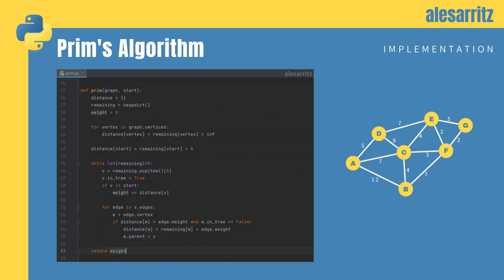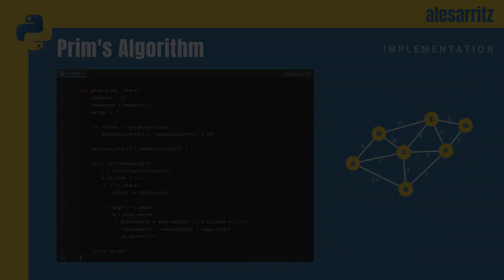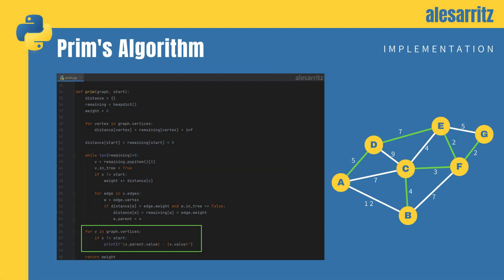When we exit the loop, we return weight. If you want to know which edges were chosen by the algorithm, just loop through the vertices and print their value together with their parents.